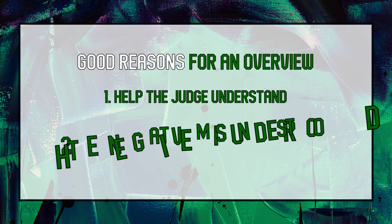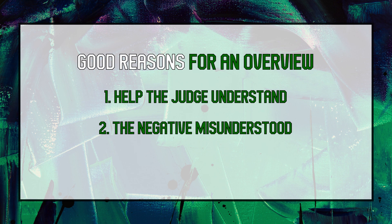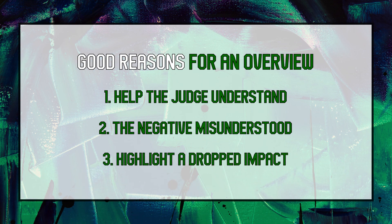Second, the negative seems to have misunderstood your case. If several of the 1NC's responses seem unresponsive, and if you'll be repeatedly explaining why neg arguments don't apply on the line-by-line, it can be helpful to start by explaining your thesis. Clearly state your thesis and explain why the 1NC's front line missed its mark — this is an opportunity for an effective connection moment. This can't replace individual line-by-line responses to each 1NC argument, but it can make those responses more effective. Third, the negative dropped one or more of your impacts. If there is no clear place to extend your impact on the line-by-line, it can be appropriate to do so in the overview. To be effective, this must be brief, direct, and clear. A lengthy re-summary of the 1AC impact evidence is an unnecessary waste of time.